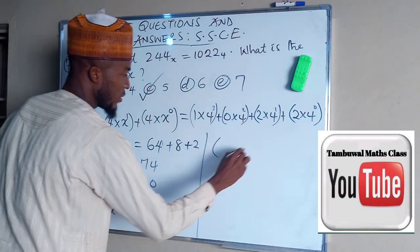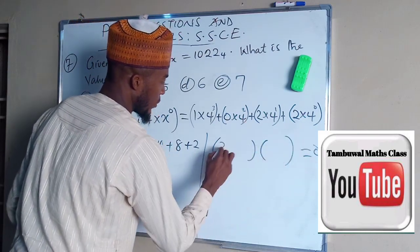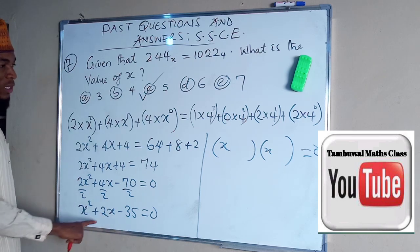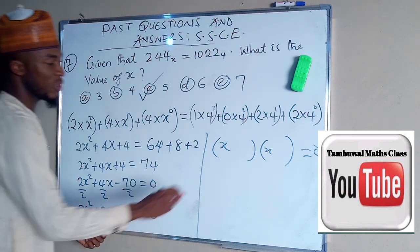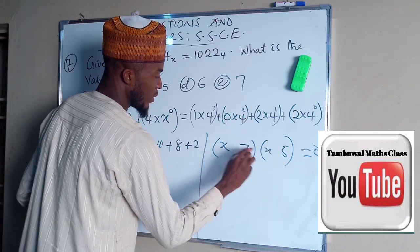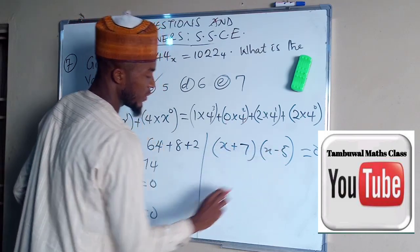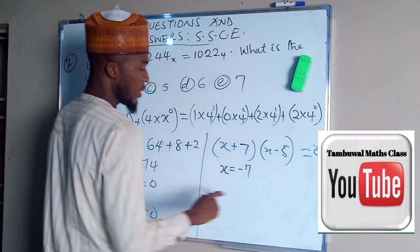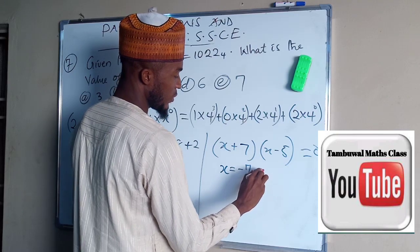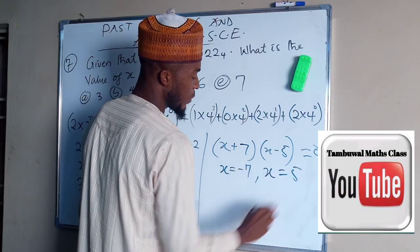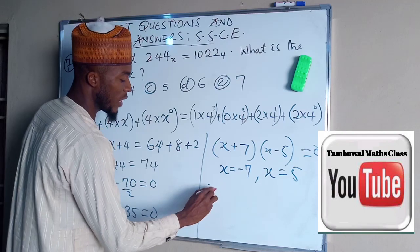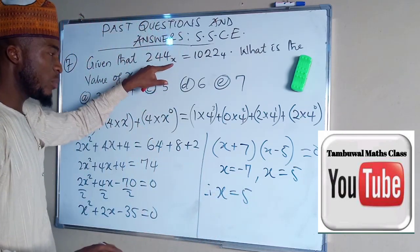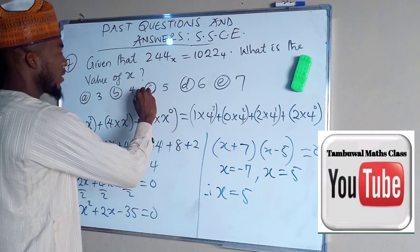By factorization, we think of two numbers. When we multiply together, we get 35. And when we add them together, we get the positive number 2. And the numbers are 7 and 5, plus minus. If you set this one to be equal to 0, you have x equal to negative 7. And if you set this one to be equal to 0, you have x equals to 5. So the actual value of x is equal to 5 because x is representing a base and we don't have a negative base. So the right answer here is 5.